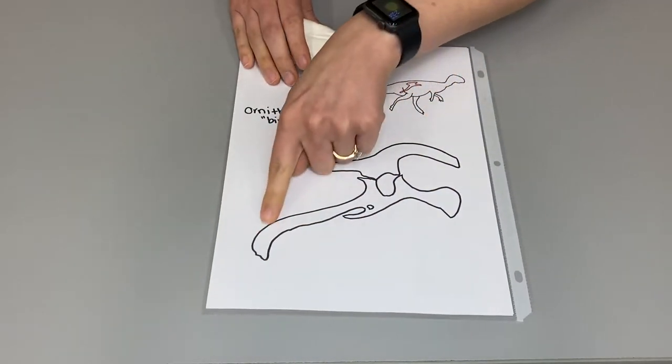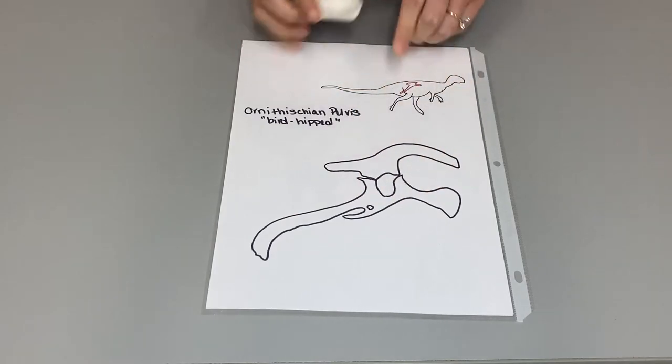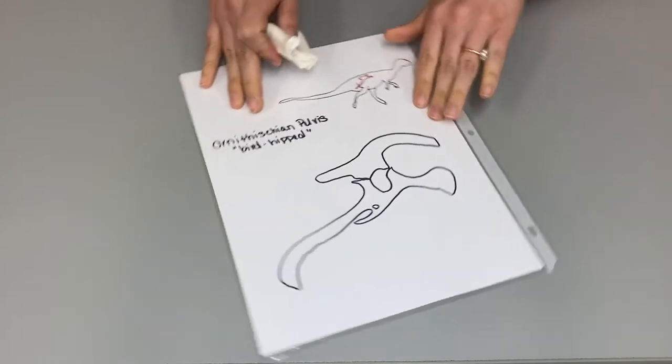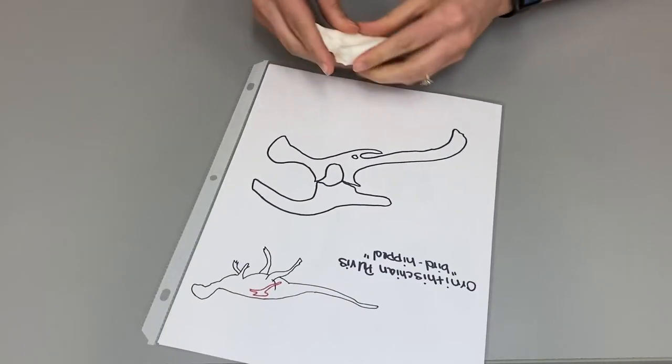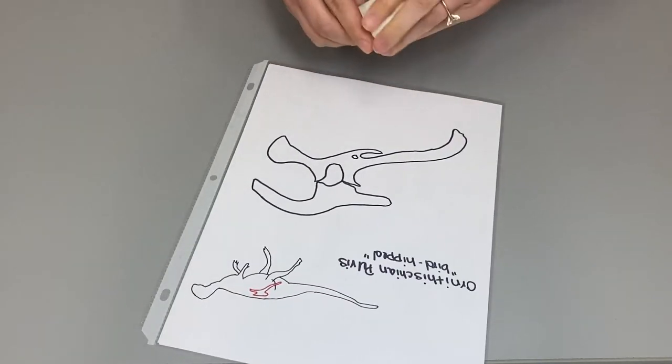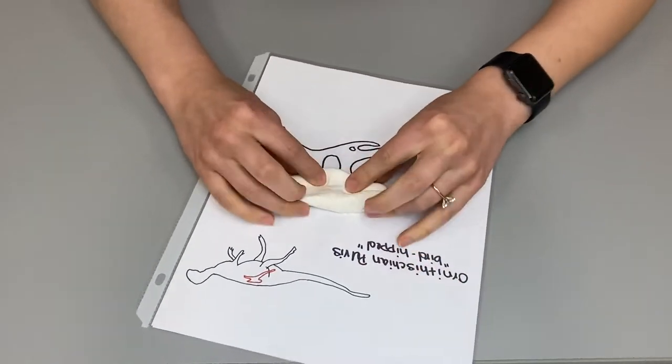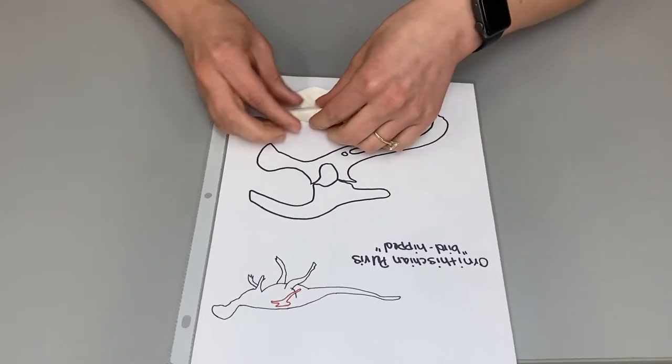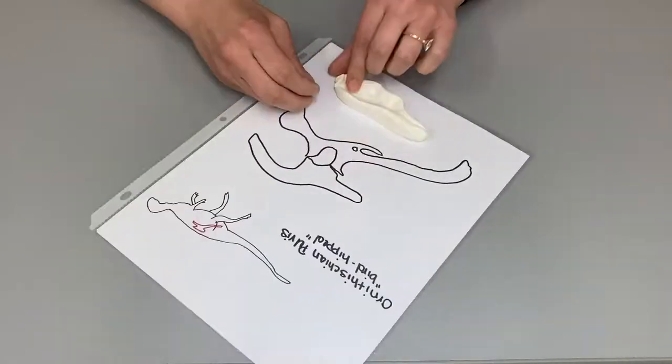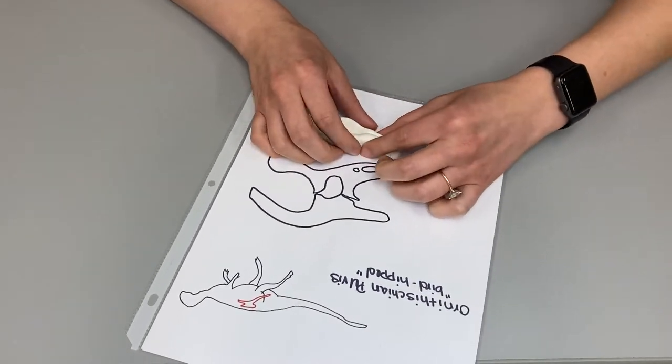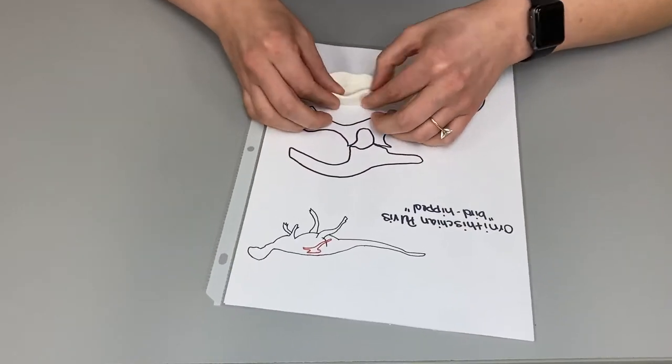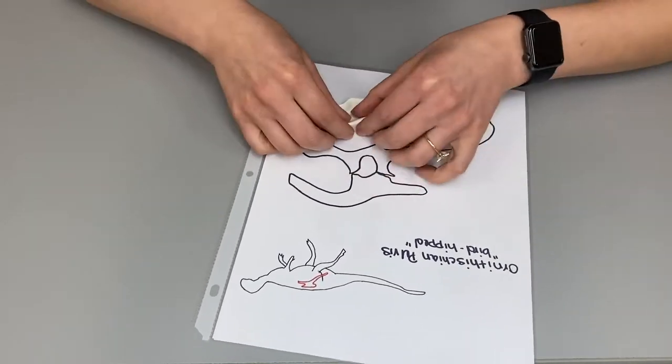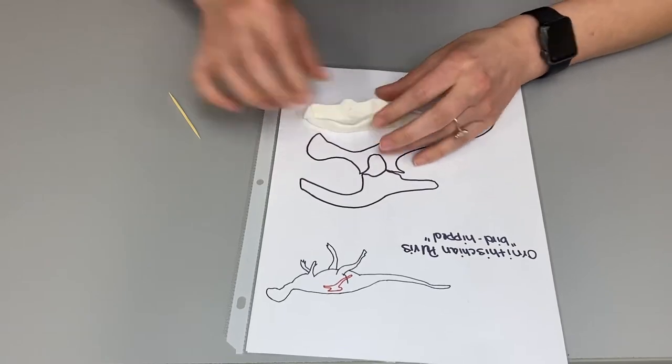We are going to start with the ornithischian template. You can see on the paper what the shape of it looks like and where it would be located in the dinosaur. Go ahead and open one of the model magic packets and separate it into halves. Take one half of the model magic and start forming the shape of the top portion of the bone that you see on your template. You don't have to use the entire packet of model magic if you don't want to or need to. You can go ahead and take one of the toothpicks that is provided in the kit and use it to help you create the shape that you want.